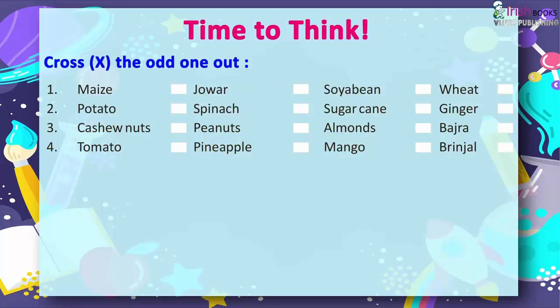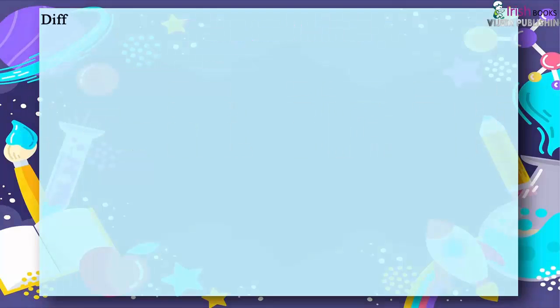4. Tomato, Pineapple, Mango, Brinjal. Different types of plants grow in different types of environment.